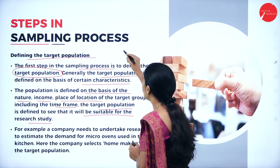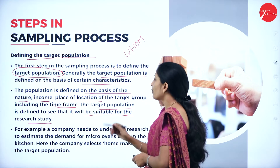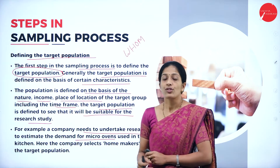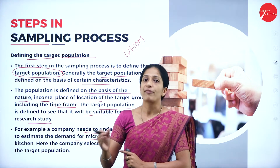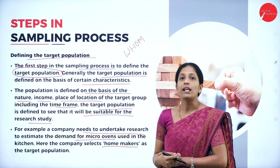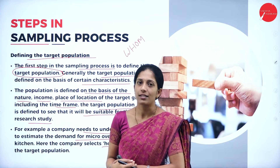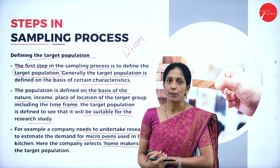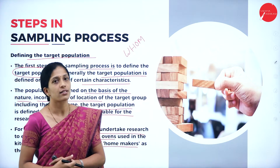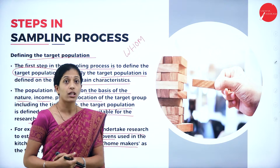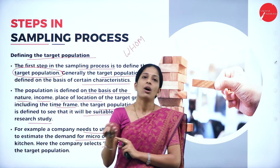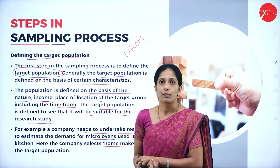For example, if a company needs to estimate the demand for micro-ovens used in the kitchen, the researcher selects homemakers as the target population, since they know the most about kitchen work. Similarly, if the researcher wants to collect information from students, students are the target population — but he must further segregate whether it is school students or college students, medical students or any other type. The target population must be decided in advance.